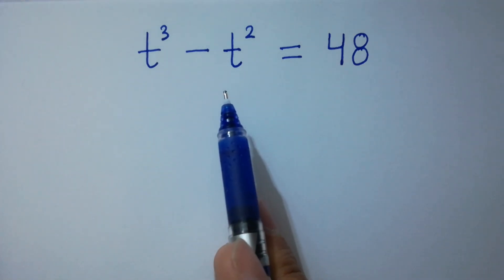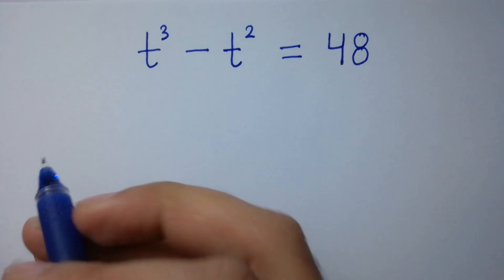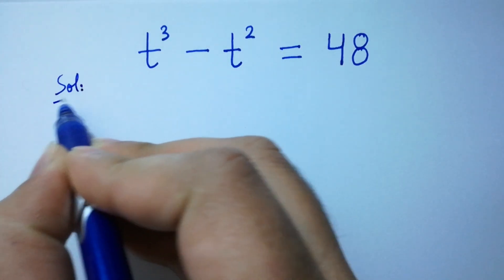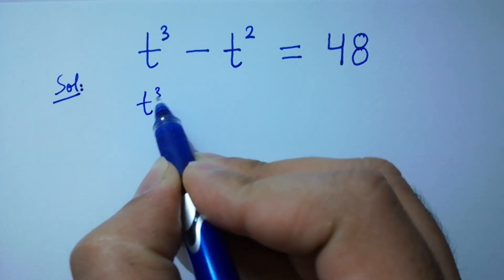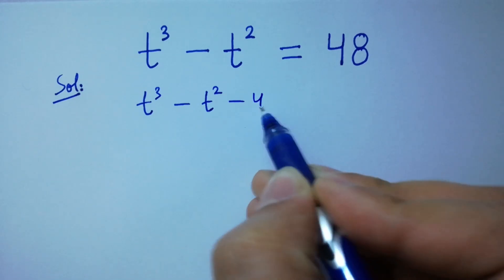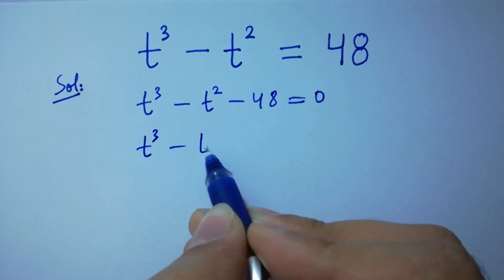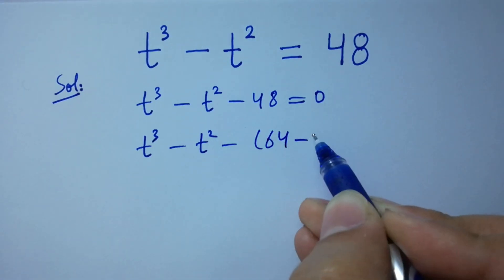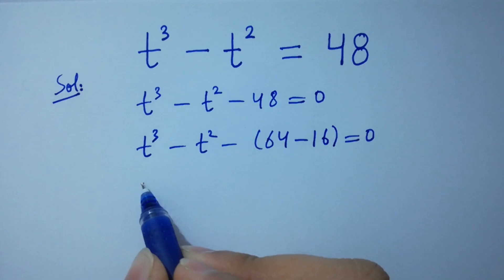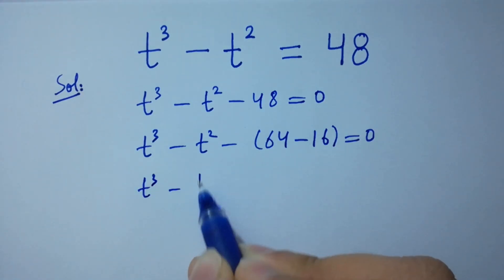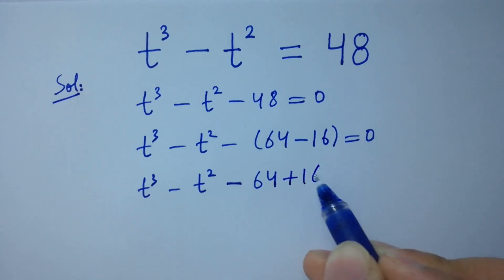Hello friends, find the value of t if t³ - t² = 48. Let's have a solution. t³ - t² = 48 can be written as t³ - t² - 48 = 0, which is the same as t³ - t² - 64 + 16 = 0, since 64 - 16 is 48.